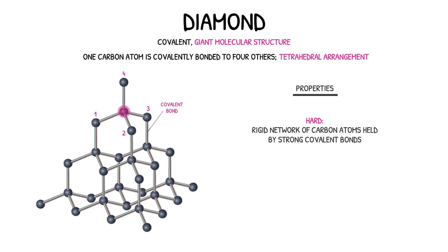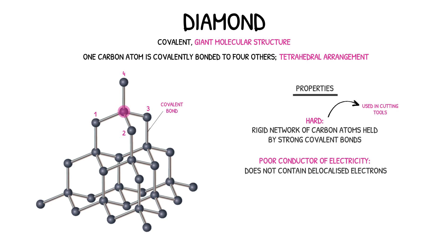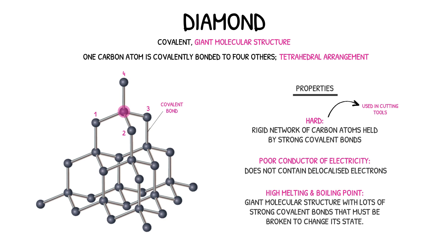This property explains why diamond is often used in cutting tools such as oil rig drills and diamond-tipped cutters. In addition, diamond is a very poor conductor of electricity. In diamond, one carbon atom is covalently bonded to four others, meaning the valency of each carbon atom is filled, so there are no free electrons to carry an electrical charge. However, much like graphite, diamond has a very high melting and boiling point. The large number of covalent bonds within its giant molecular structure require a lot of energy to be broken and change its state.